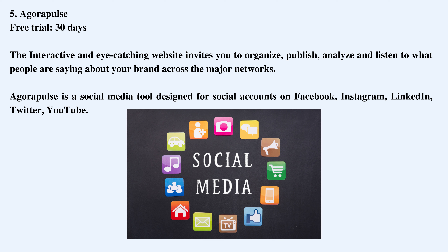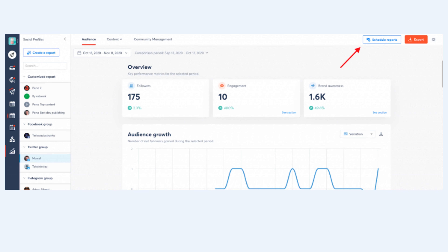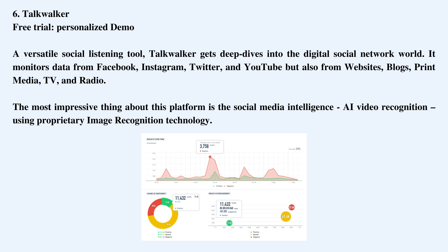5. Agorapulse — free trial, 30 days. The interactive and eye-catching website invites you to organize, publish, analyze, and listen to what people are saying about your brand across the major networks. Agorapulse is a social media tool designed for social accounts on Facebook, Instagram, LinkedIn, Twitter, and YouTube. This platform comes in handy when conducting a social media audit because of its user behavior data feature and automatic scheduled reports. This social media management platform is also available as a mobile application in your App Store or Google Play Store.